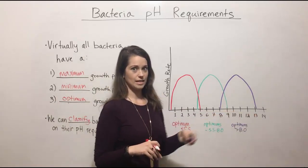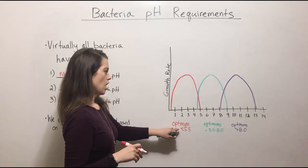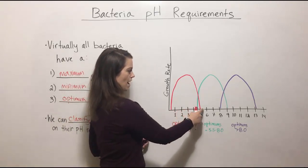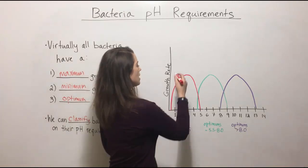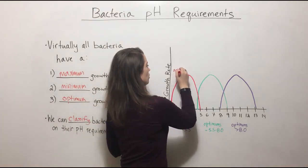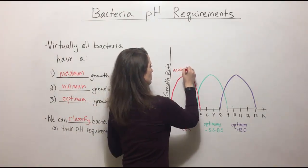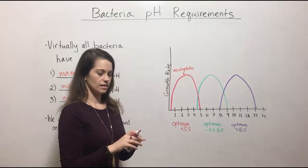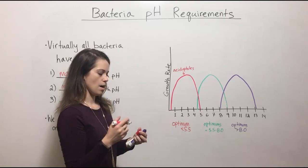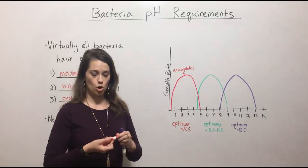Anything greater than that is basic. So when there's an optimum that's either five and a half or even lower, these are bacteria that we call acidophiles. So they are acid-loving and they have the ability to thrive at those lower pHs.